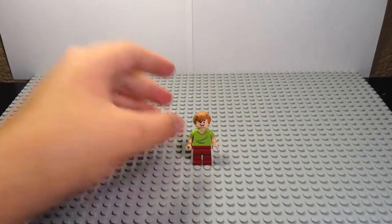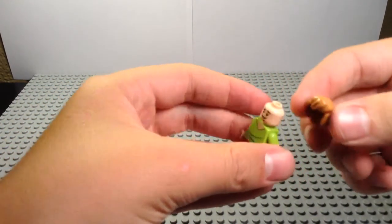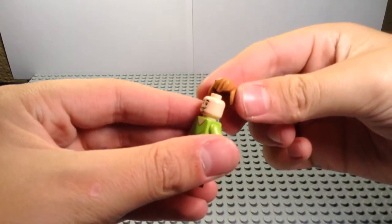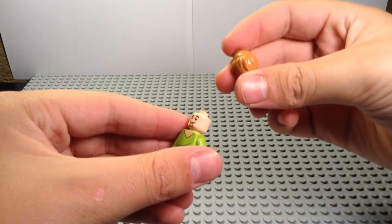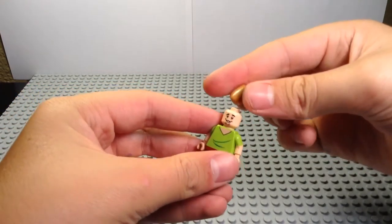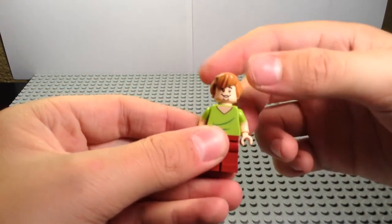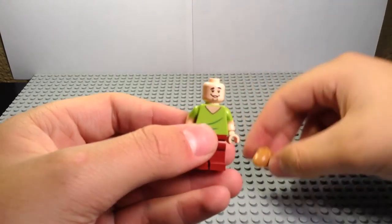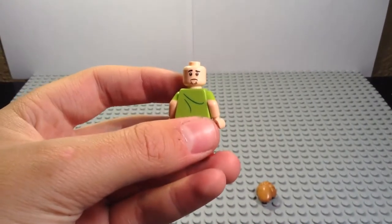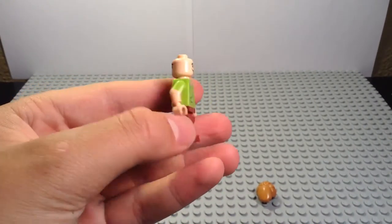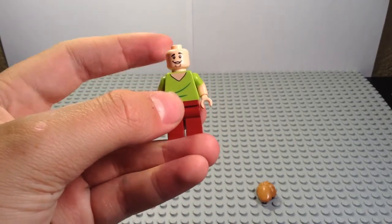Alright guys, here is Shaggy, included in the set. Like I said with Fred, what I believe to be a new hair piece, looks pretty cool with a lot of detail. I like it—it can be utilized in many different occasions, whether you're doing a custom minifig or something. He has the two-faced minifig head, and his torso is printed as you'd expect.